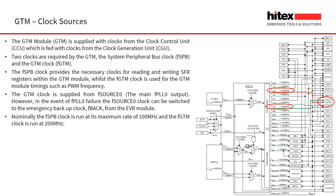This clock tree diagram shows the distribution of clocks from the clock generation unit through the clock control unit down to the individual peripherals and sub-blocks within the silicon. The FGTM module is provided with two clocks: the first is the system peripheral bus clock which runs nominally at 100 MHz, and the second is the FGTM clock which can run up to a maximum speed of 200 MHz.